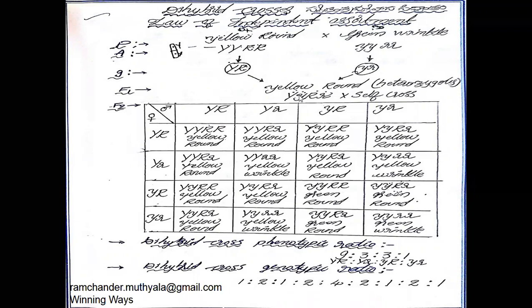The F1 heterozygotic plants, when crossed by self-cross, produce four types of gametes independently. These four types of gametes are: capital YR, capital Y small r, small y capital R, and small y small r. This independent formation of gametes is called the Law of Independent Assortment.